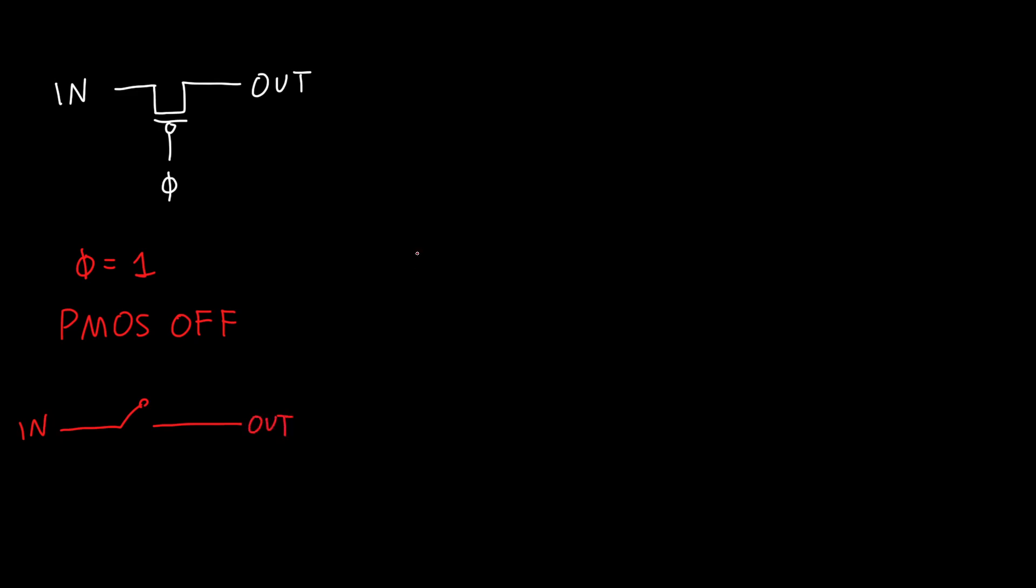But now what about if phi is equal to zero? Now our PMOS, if we just redraw it, this is equal to zero volts.